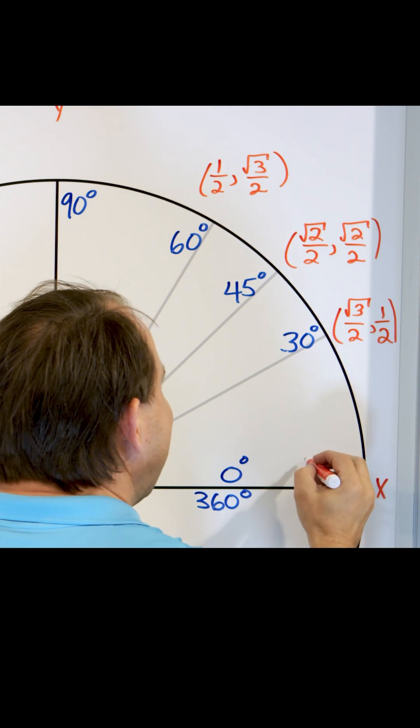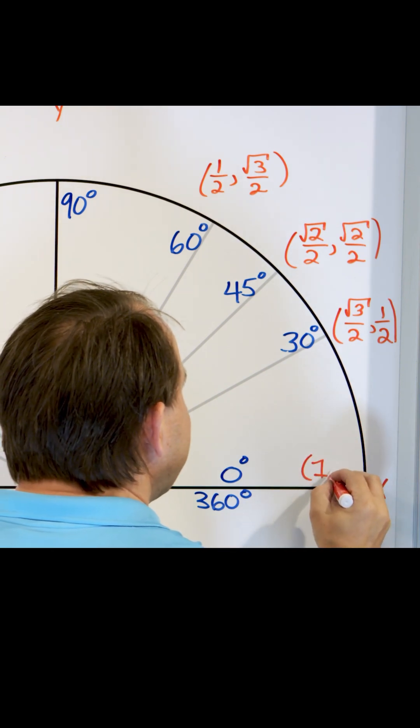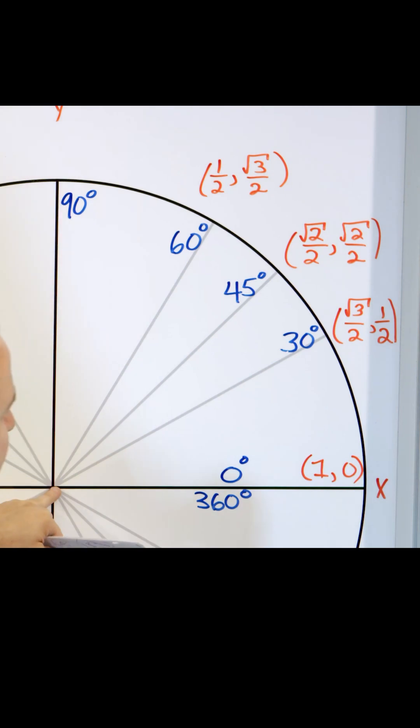This is a unit circle. So the X coordinate of this point right here, the X coordinate is one and the Y coordinate is zero. That's what this point is right here. So this is one comma zero.